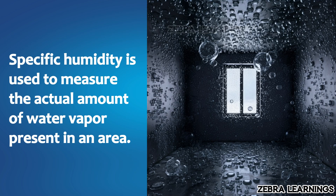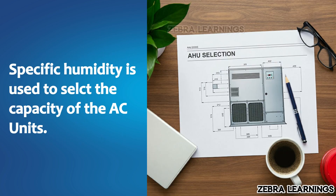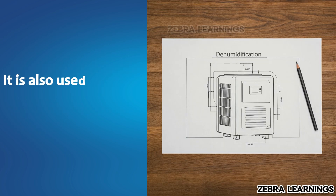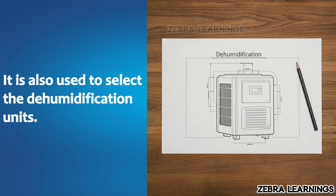Specific humidity can be used to measure the actual amount of water vapor present in an area. This is used in HVAC design to determine how much water vapor is present in an area and what capacity of AC is needed to remove it. In addition, this specific humidity value is also used to install dehumidification equipment.